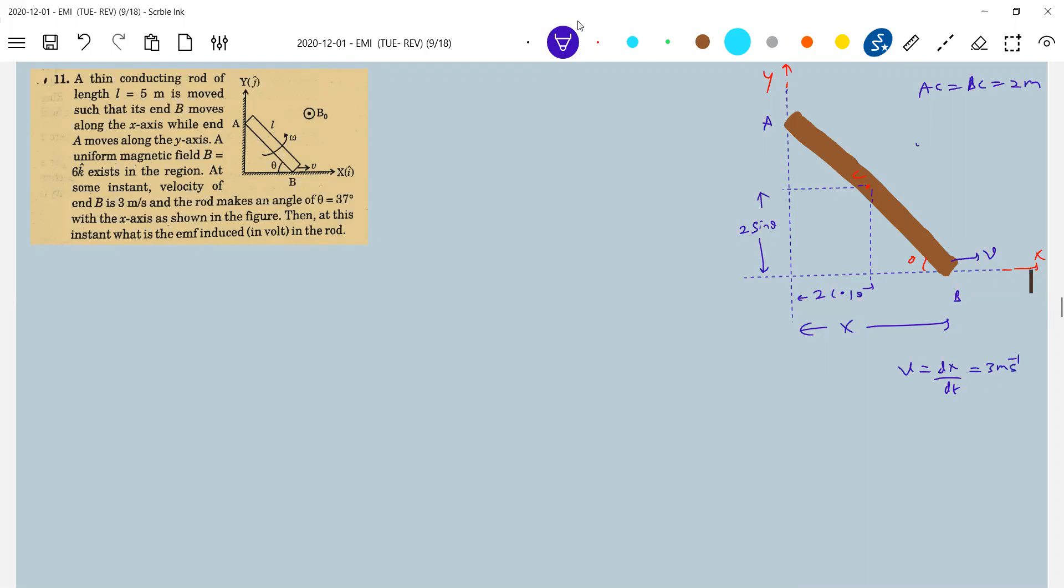Velocity of the end B is three meters per second. Keep this particular thing. What we want: we wanted velocity of center of mass. This two cos theta, two sine theta - all of you able to understand? The coordinates of center of mass I'm defining. What is r bar, coordinates of center of mass? So this should be 2 cos theta i cap.